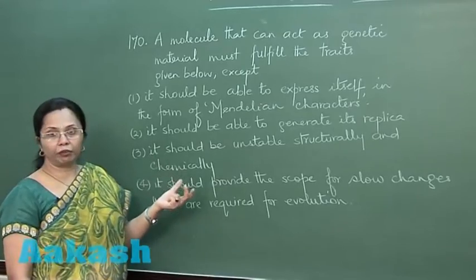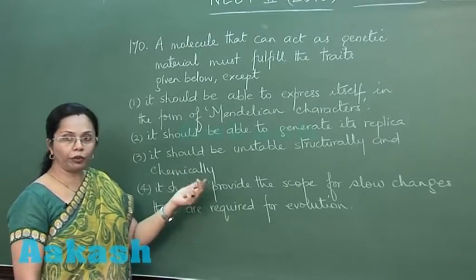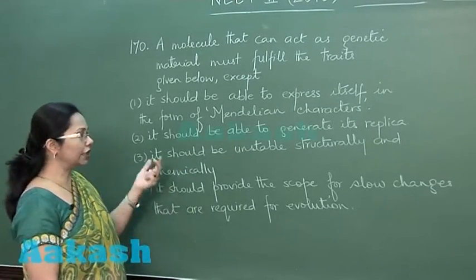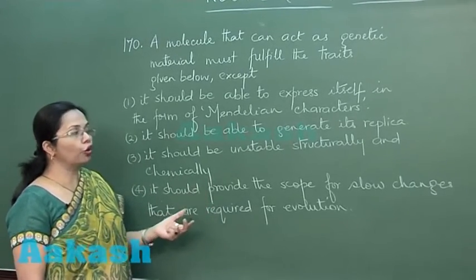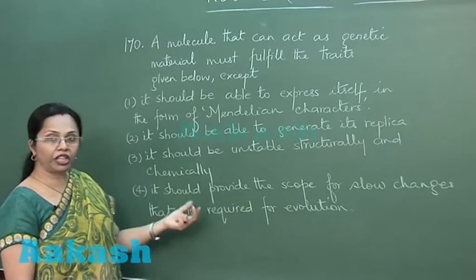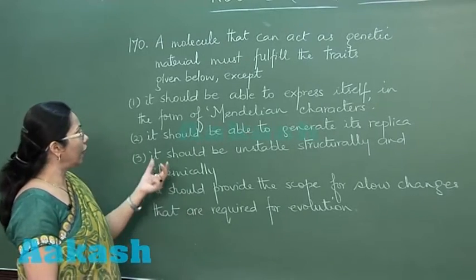to generate its replica so that it can make its copies which can go into the daughter cells. That's also right. It should be able to provide the scope for slow changes so that variations can arise. That's there, but